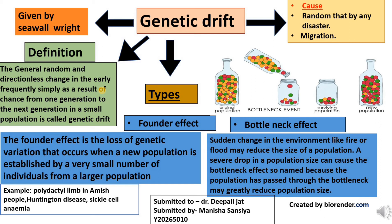Genetic drift in which chance events alter allele frequency can occur in such a case because the storm transports some individuals but not others from the source population. The founder effect probably accounts for the relatively high frequency of certain inherited disorders among isolated human populations. For example, in 1814, 15 British colonists founded a settlement on a group of small islands in the Atlantic Ocean midway between Africa and South America.